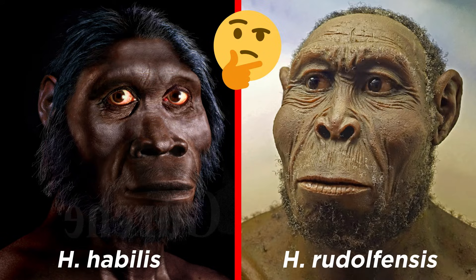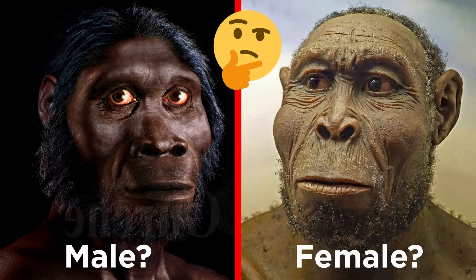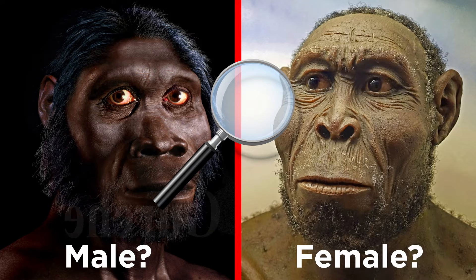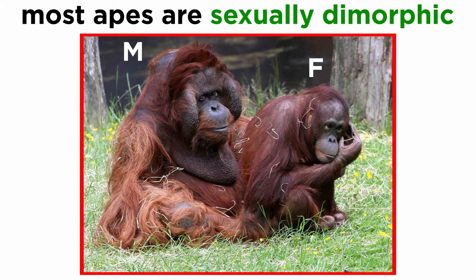For a while, there was a question as to whether Homo habilis and Homo rudolfensis represented two unique species, or a male and female of a single, sexually dimorphic species. A close examination of the hominins reveals the likely answer. Most apes are sexually dimorphic, with males presenting a variety of deviations from the female morphology.